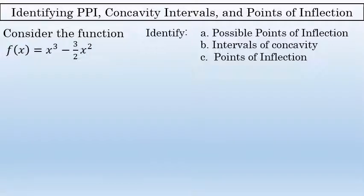In this example, I'm going to determine for the function f of x equals x to the third minus 3 halves x squared what the possible points of inflection are, and then identify the intervals of concavity, which will help me find the exact points of inflection.